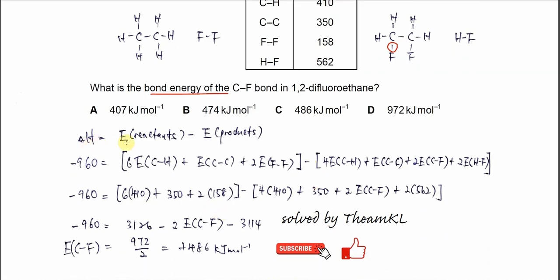Enthalpy of the reaction equals the sum of bond energies of reactants minus the sum of bond energies of products. For the reactants, you need to undergo bond breaking, so it's endothermic, positive. For the products, it's bond formation, so it's exothermic, negative.